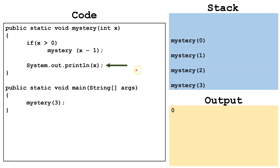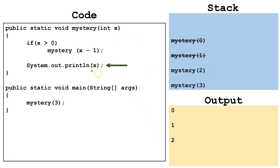Now that we've finished mystery(0), we pop it off the top of the stack. We continue back down to mystery(1) and complete the unprocessed portion — here x equals 1, so we output 1, then pop it off. Then we go to mystery(2), x equals 2, so we output 2, and pop that off. And finally, we go to mystery(3) where x is 3, output 3, then pop that off the stack and finish the program.